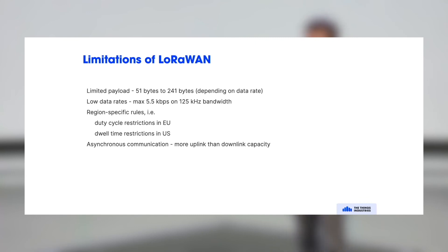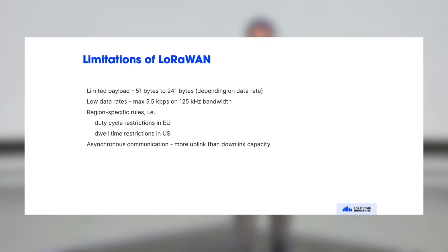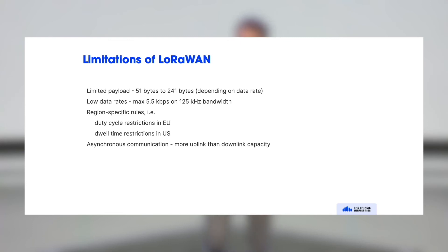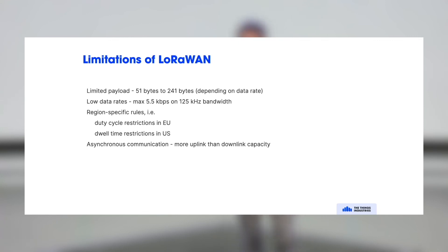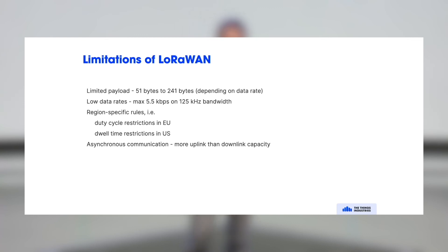Some limitations: payload size is often very limited. At very low data rates — high spreading factor — the limit is typically 51 bytes. At higher data rates, the limit goes up to 241 bytes. It's highly recommended to use a smart binary encoding mechanism for payload. Don't send text, JSON, or XML — be mindful of every bit and byte. Typically you would decode those bytes on the server and transform them into a JSON object for the application layer.